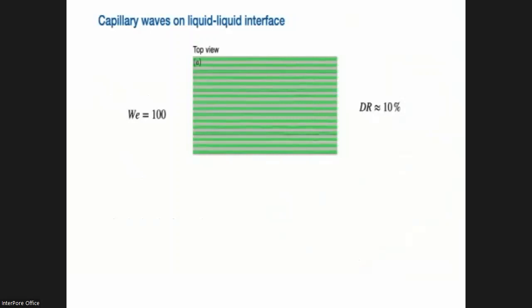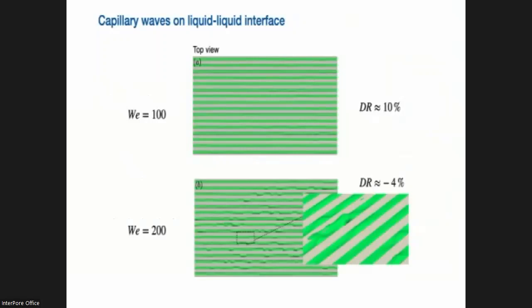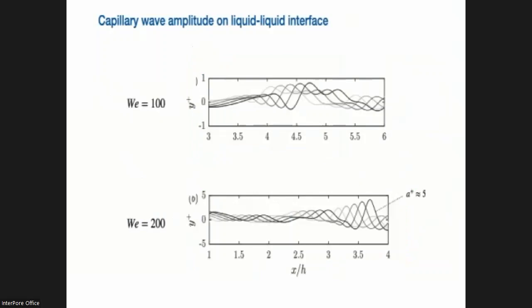So if we take a look at the center of these grooves, what happens, we can see that we have waves. So this is a Weber number 100 and Weber number 200. The difference is that this is the waves in the streamwise direction at different time instance. So we can see that we have way larger waves in terms of amplitude for Weber number 200 compared to Weber number 100.